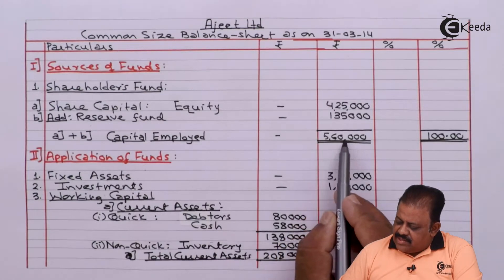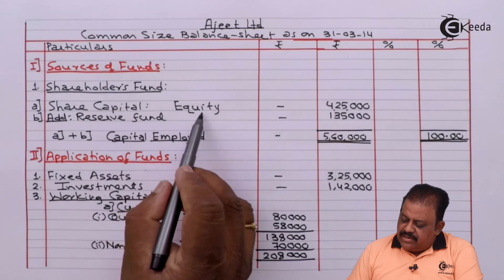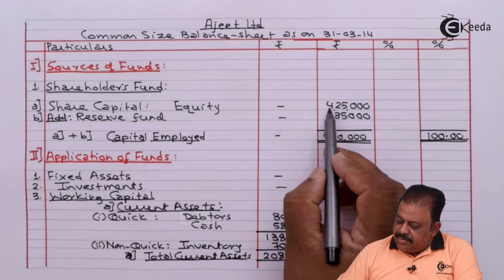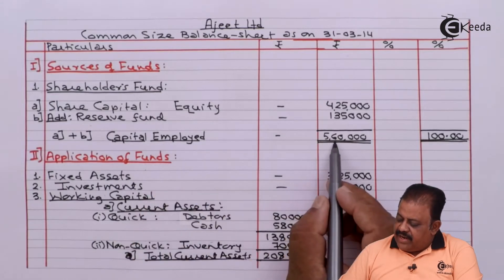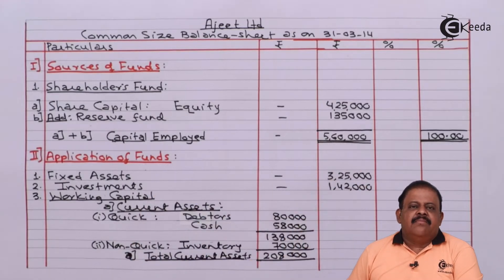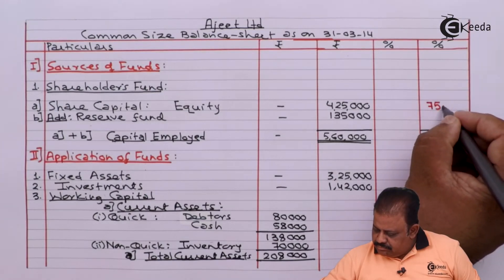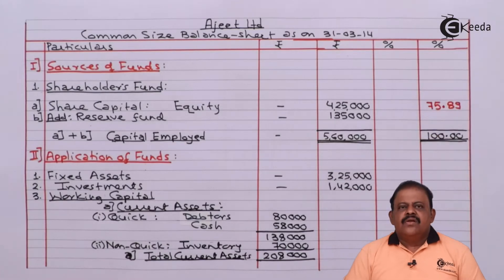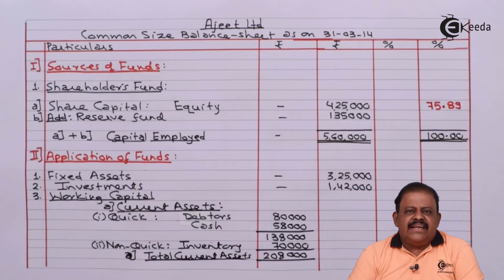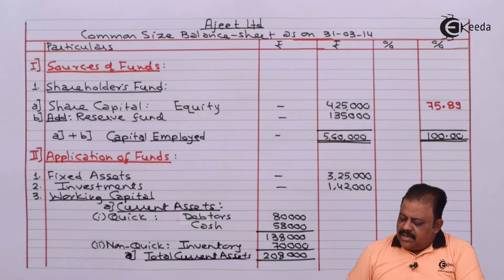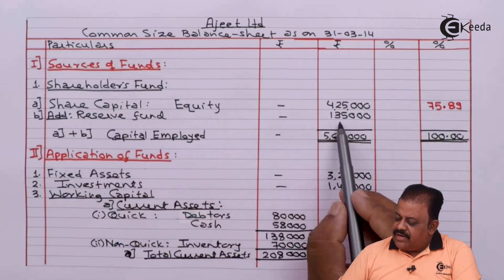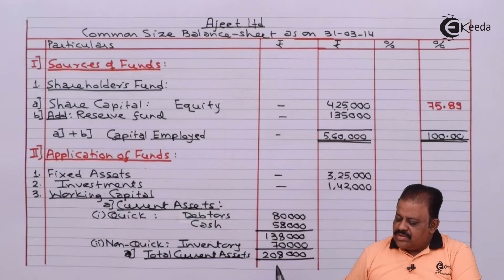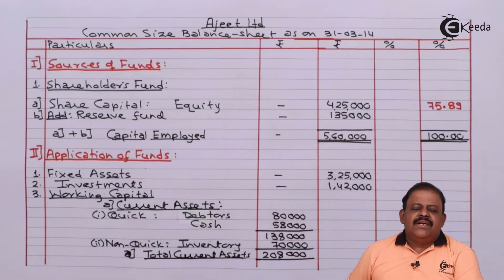The total we have is 5,60,000. Starting with equity share capital of 4,25,000: 4,25,000 divided by 5,60,000 multiplied by 100 gives 75.89 percent. Similarly, reserves and funds of 1,35,000: 1,35,000 divided by 5,60,000 multiplied by 100 gives 24.11 percent.